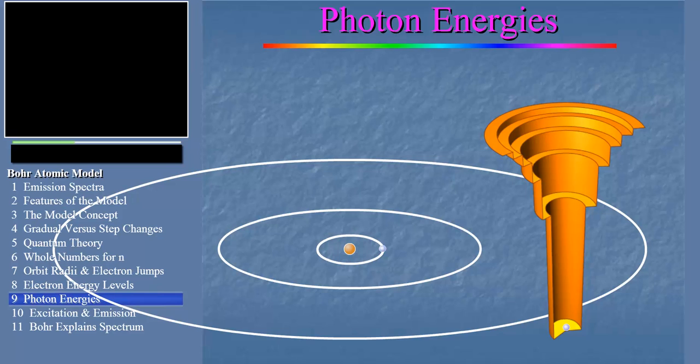Now along comes a photon of just the right energy. The electron absorbs it and jumps up to level two. But the electron prefers the ground state of course, so it falls back down to level one.